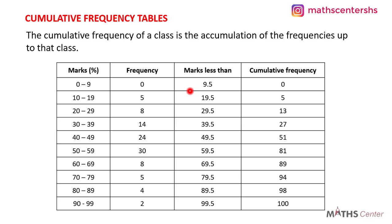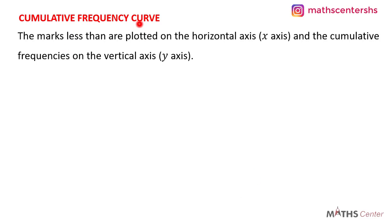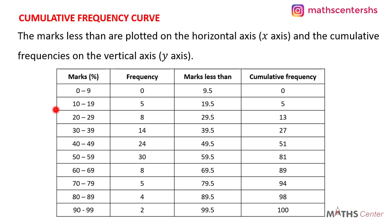We have now completed the marks less than and cumulative frequency columns — this is how a simple cumulative frequency table looks. Now let's learn how to draw a cumulative frequency curve. On the cumulative frequency curve, the marks less than are plotted on the horizontal axis (x-axis) and the cumulative frequencies are plotted on the vertical axis (y-axis).